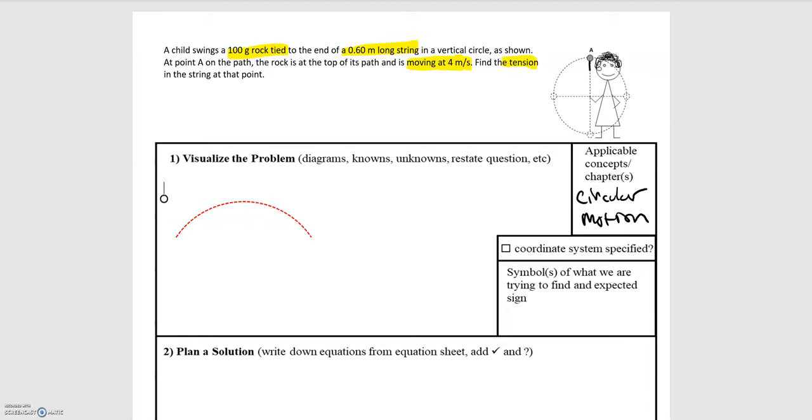Coming over here to the picture, we've got the string here. We're looking for the tension in that string, and we've got the rock up at the top at point A. Since we're looking for the tension in the string and the string is acting on the rock, the rock is our system in this case.